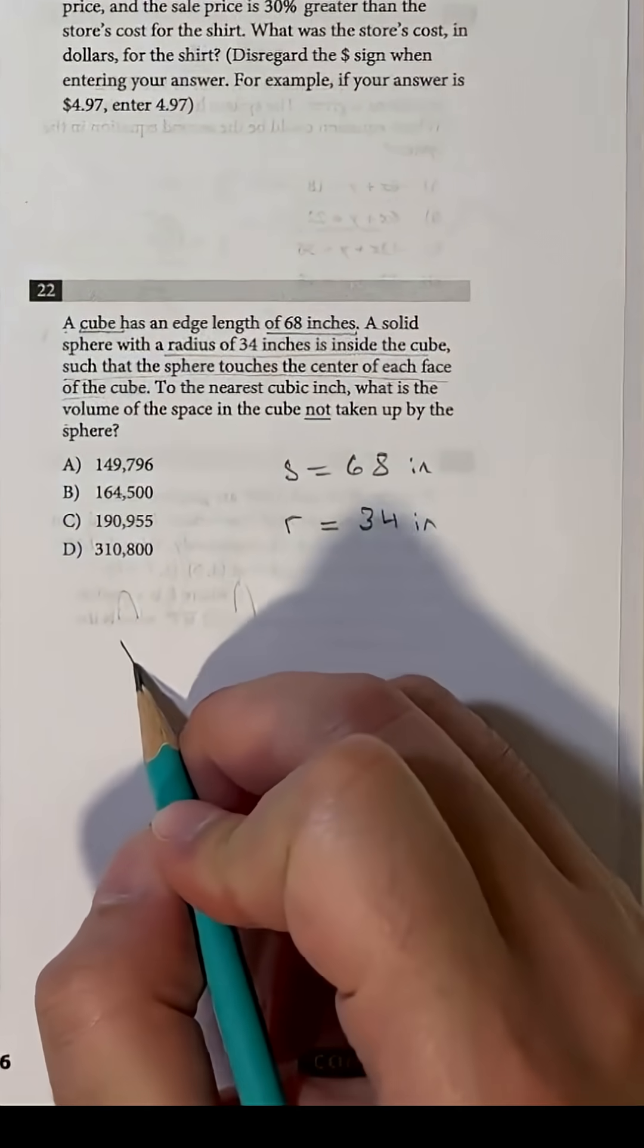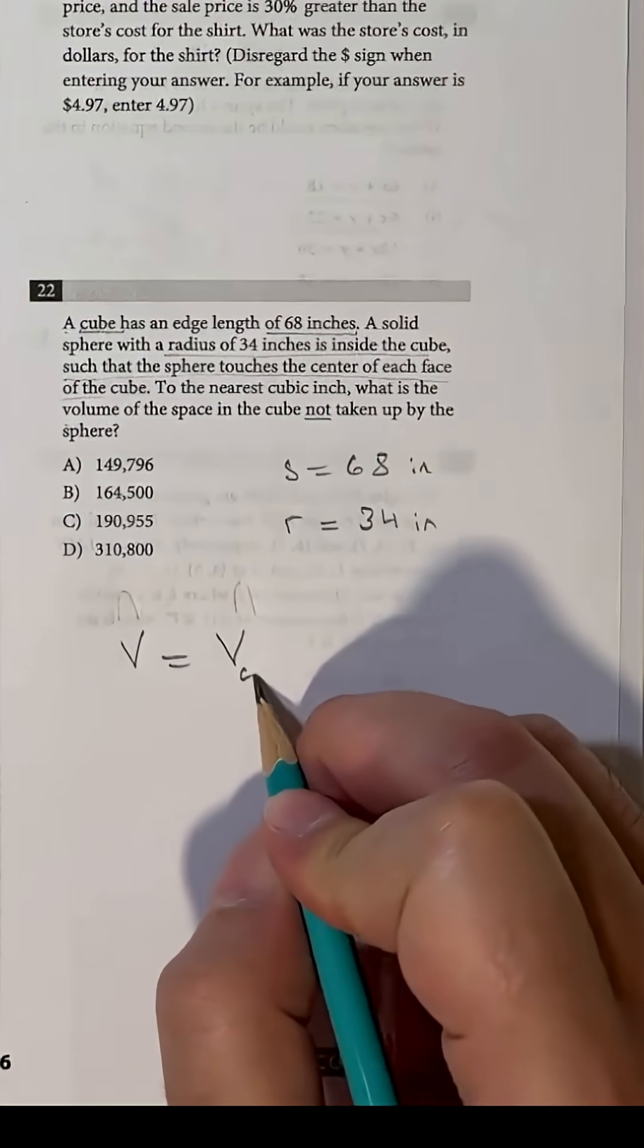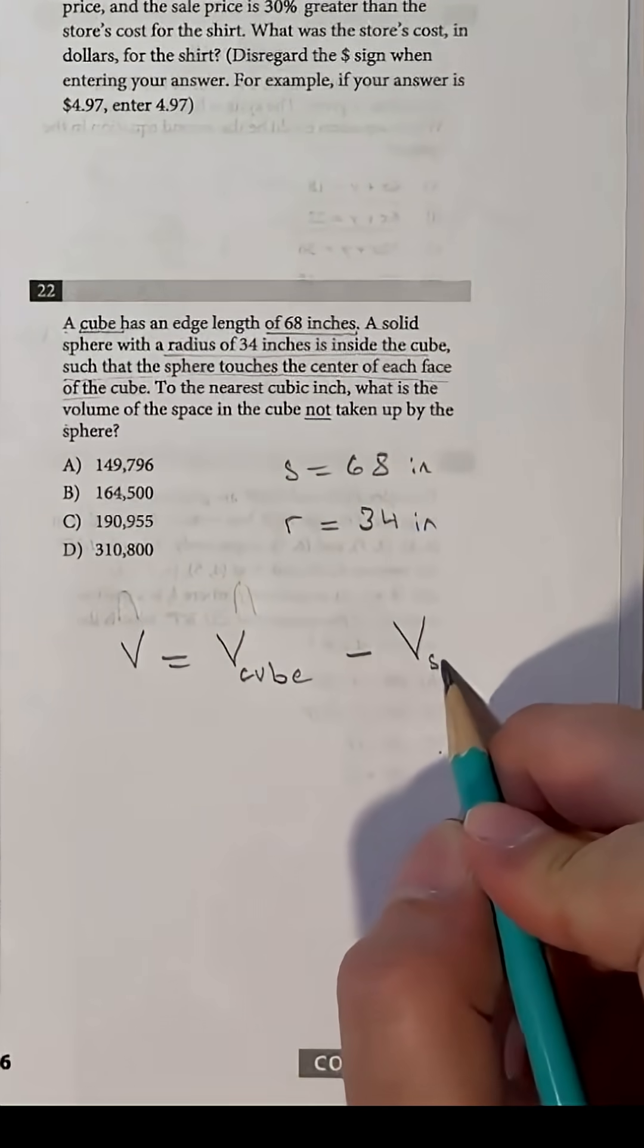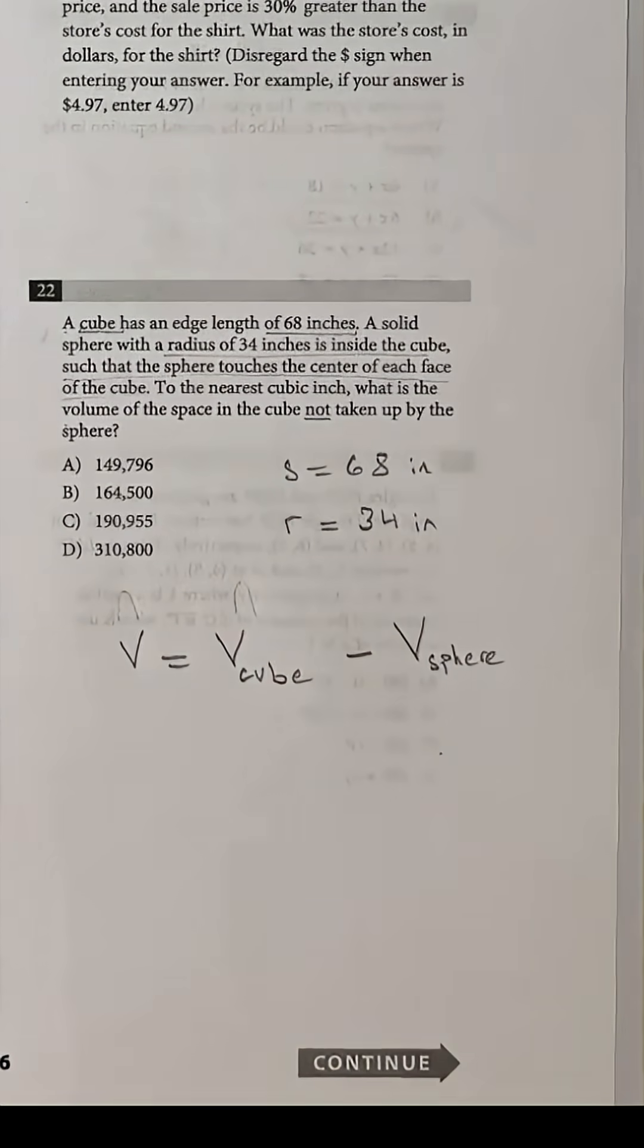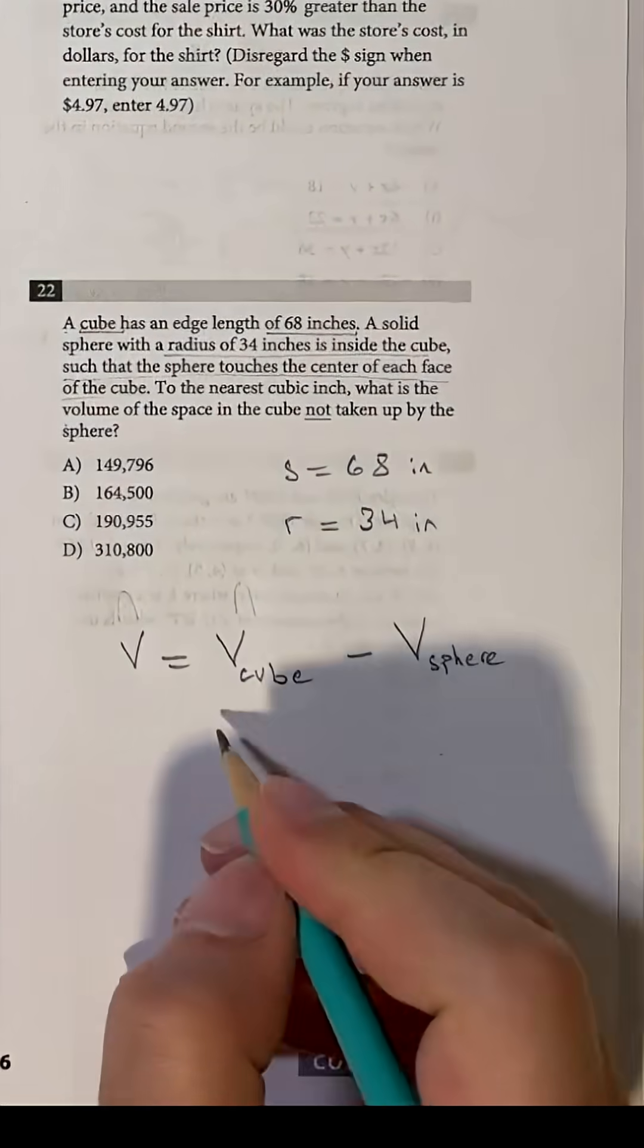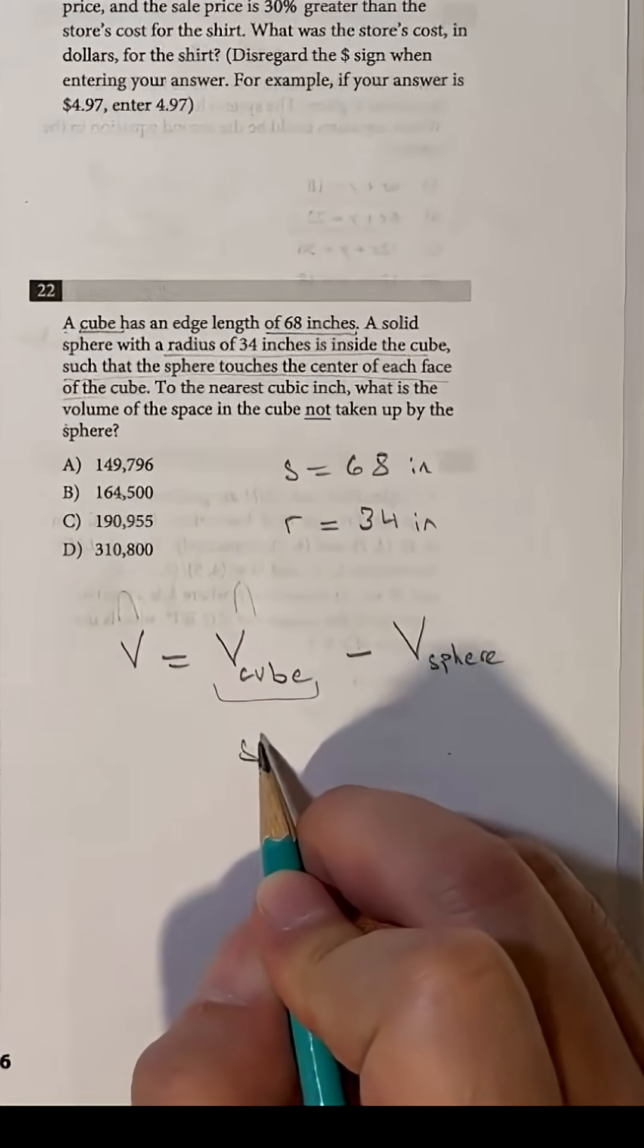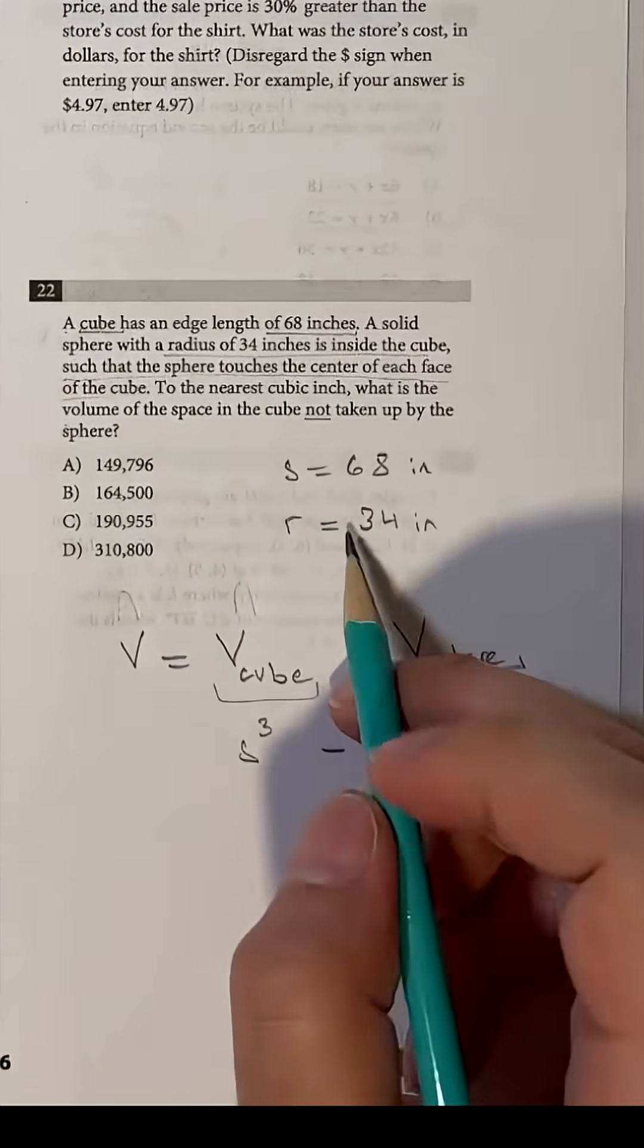Since the sphere touches the center of each face of the cube, this implies that the sphere is totally contained inside the cube. So the volume of the space in the cube not taken up by the sphere equals the volume of the cube minus the volume of the sphere.